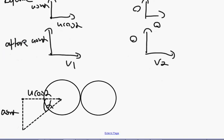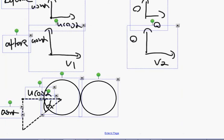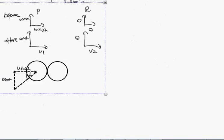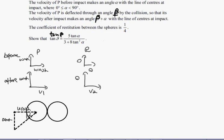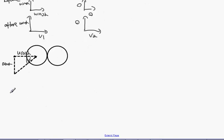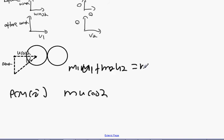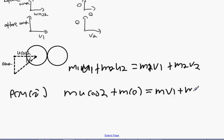Now that you've figured out your speeds, what we're going to do next is put them into the formulas. We're going to go for the principle of conservation of momentum. So M U cos alpha plus M times 0 equals M times V1 plus M V2. We're going to get V1 plus V2 equals U cos alpha.